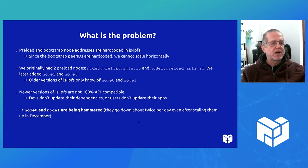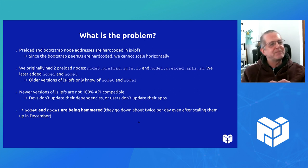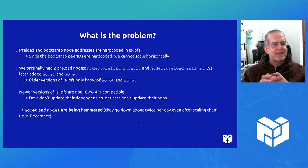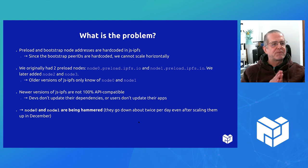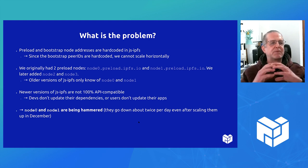People are not upgrading because upgrading is a pain. Not enough care has been taken to ensure API compatibility between versions — though things are getting better. Upgrading from an older version to a newer version can be a hassle, so people don't do it, which means that node 0 and node 1 are basically getting hammered.